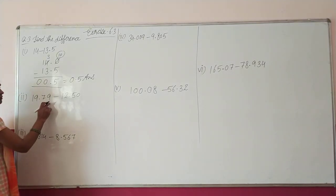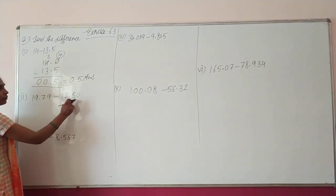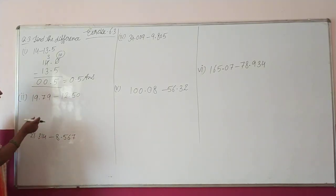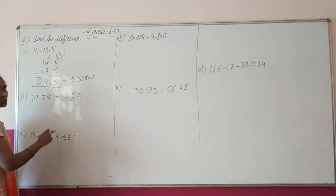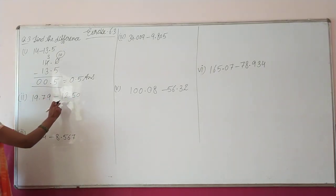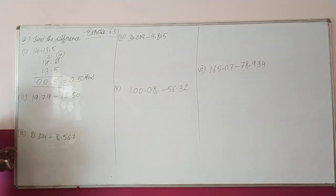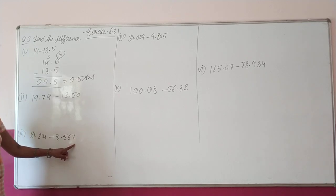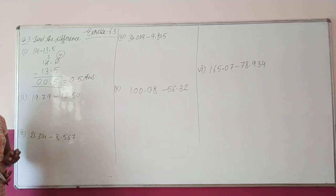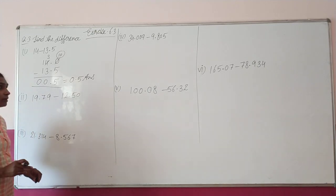Next: 19.79 minus 12.50. Both have two decimal digits, so this is straightforward — solve it yourself. Next: 21.318 minus 8.567. Both have three decimal digits — solve this part yourself too.